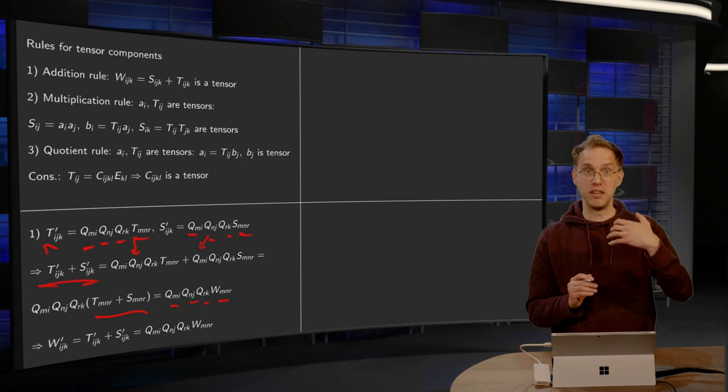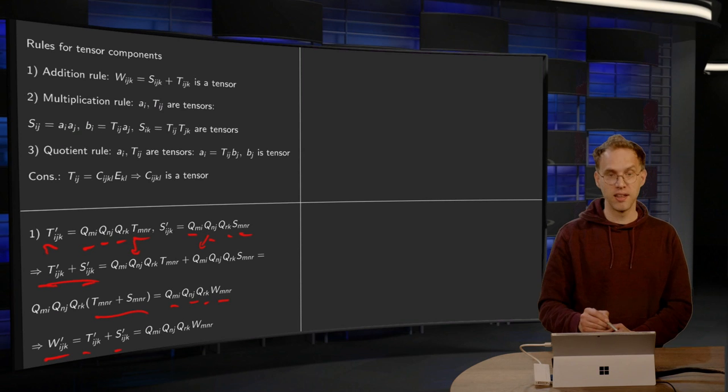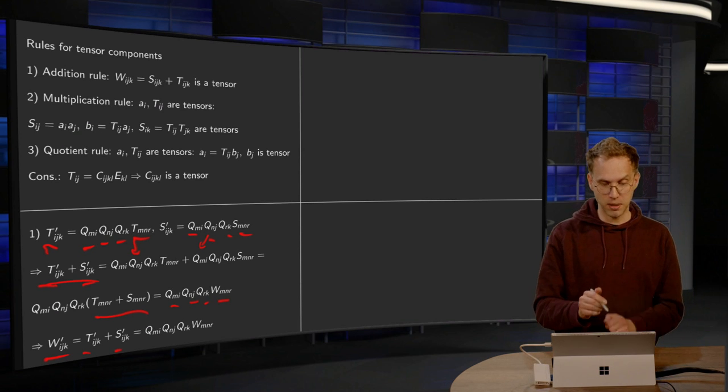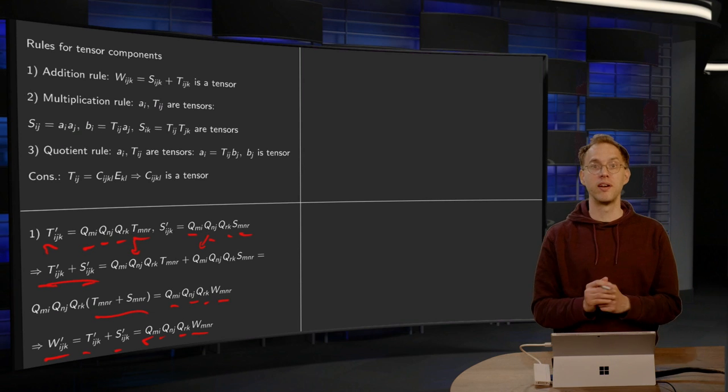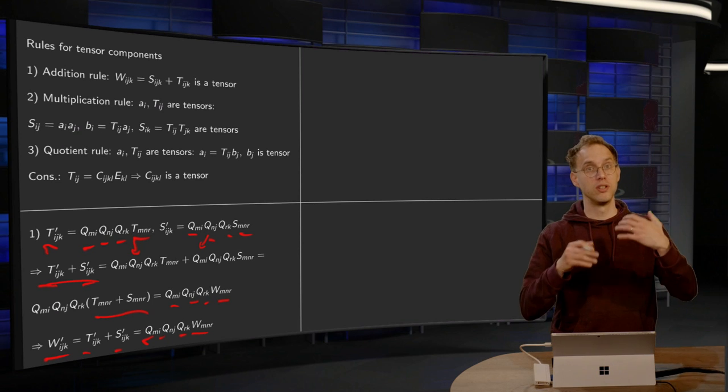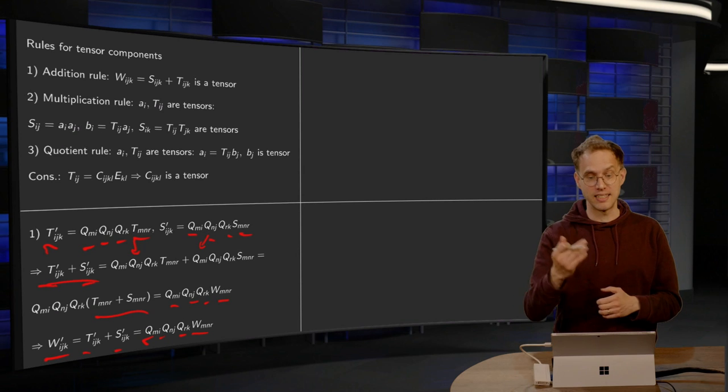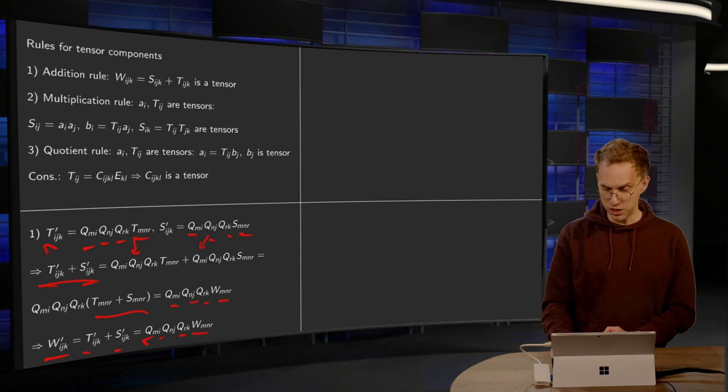So if you then define WIJK prime as componentwise, you have the WIJK prime equals Qmi, Qnj, Qrk, W MNR, and that's exactly what is required for a tensor. So your W transforms in the correct way, hence it is a tensor, and that proves the addition rule.